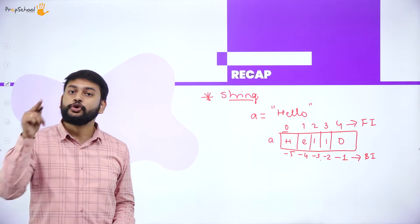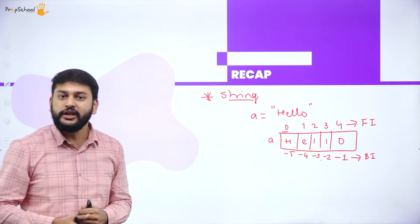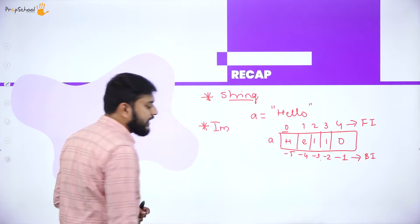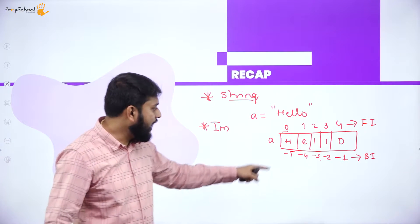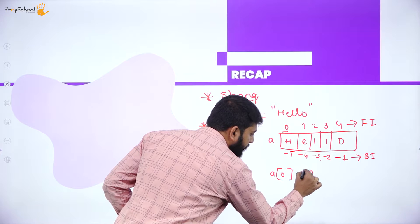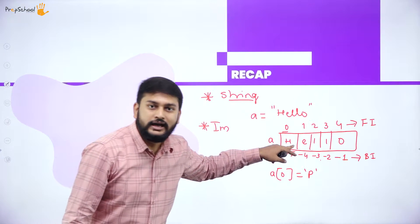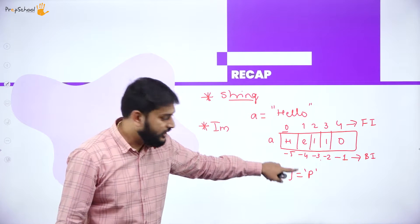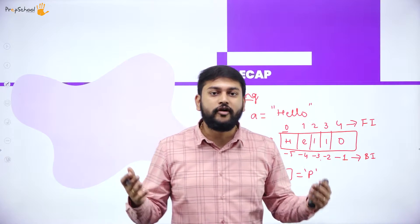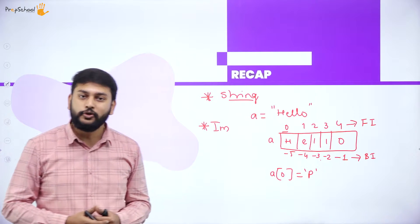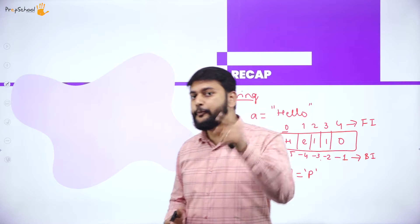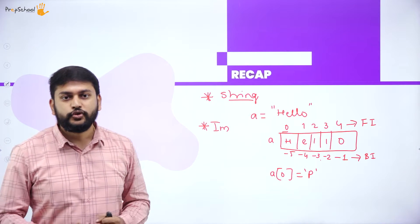The next important concept to remember is that strings are immutable. You cannot change an element in a string. For example, if I write a[0] = 'p', I cannot replace 'h' with 'p'. That is not possible. Strings belong to the immutable data type — that is a very important point to remember.